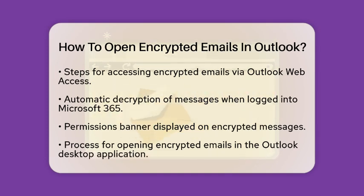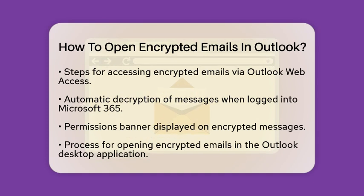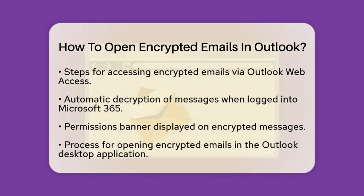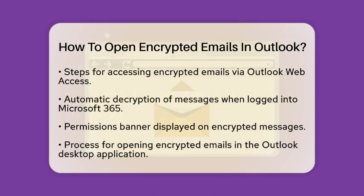If you are using Outlook Web Access, the process is quite simple. Just log into your Microsoft 365 account, and the encrypted message will be decrypted automatically. You will see a banner showing the permissions set on the message.